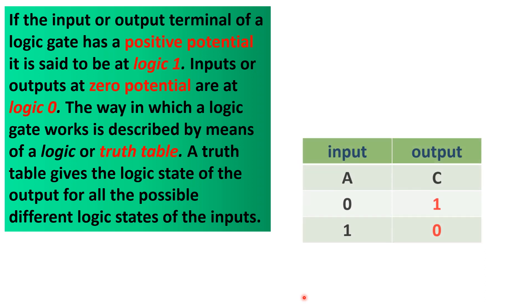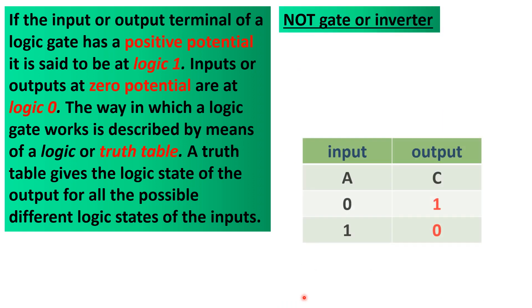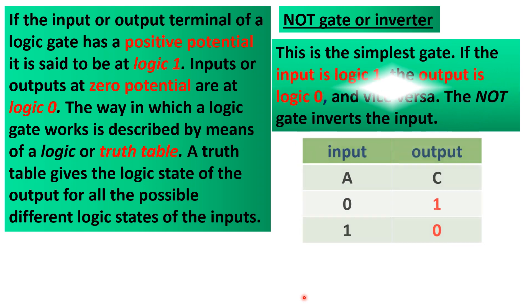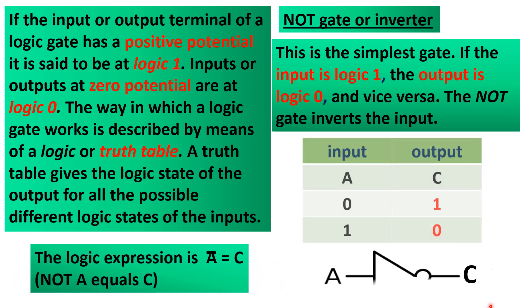Our first and most simple type of gate is the NOT gate, also known as the inverter. This is the simplest gate. As shown in this truth table, if the input is at logic 1, the output is at logic 0, and if the input is at logic 0, the output is at logic 1. So the NOT gate inverts the input.